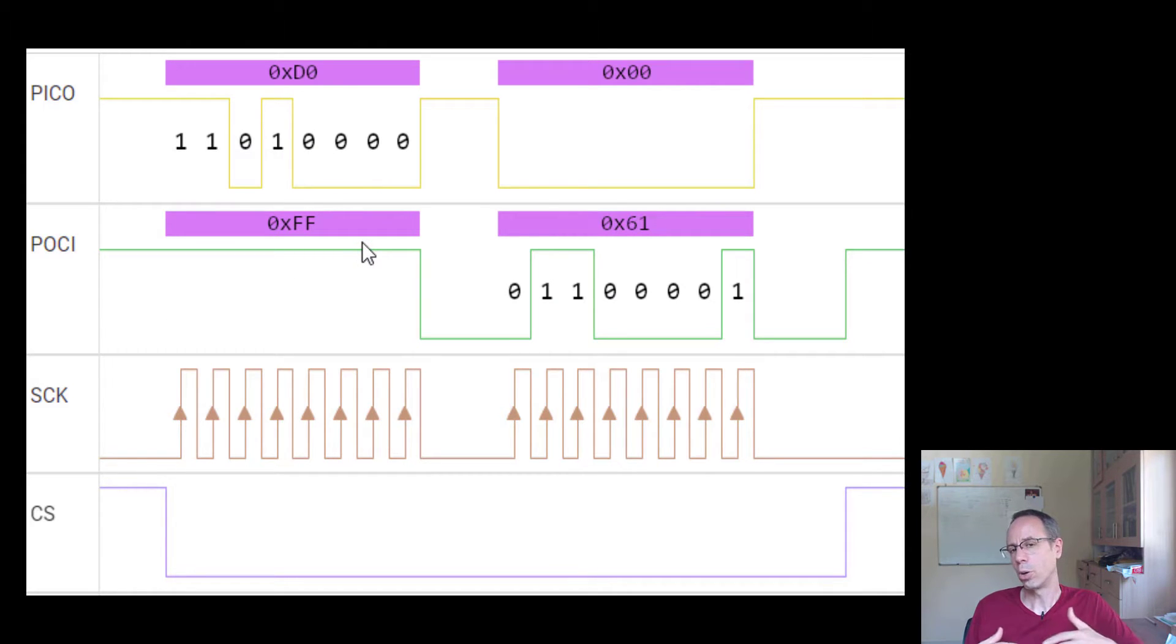The protocol supports duplex - this means controller and the peripheral can send data simultaneously. Starting normally first the controller sends something and the peripheral answers with something. The communication is, let's say, we want to read out something from the register D0. The peripheral answers with this value. This was communication with the BME 680 - this was the chip ID register.